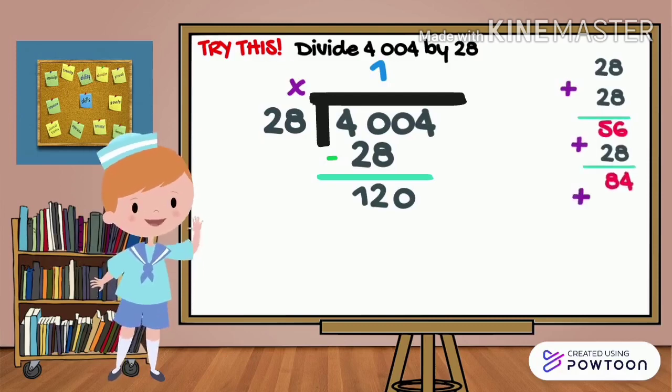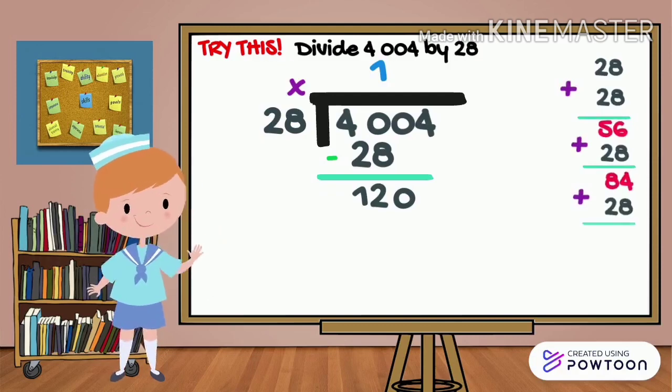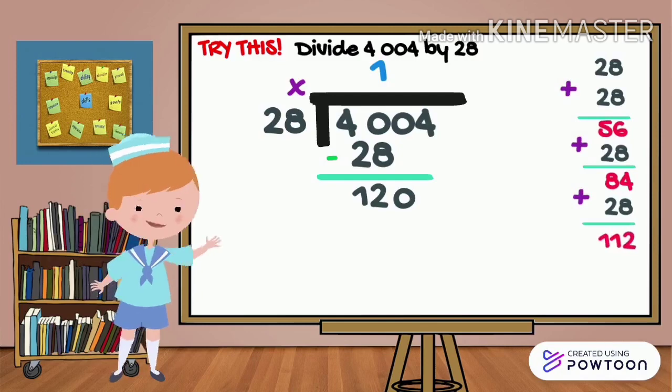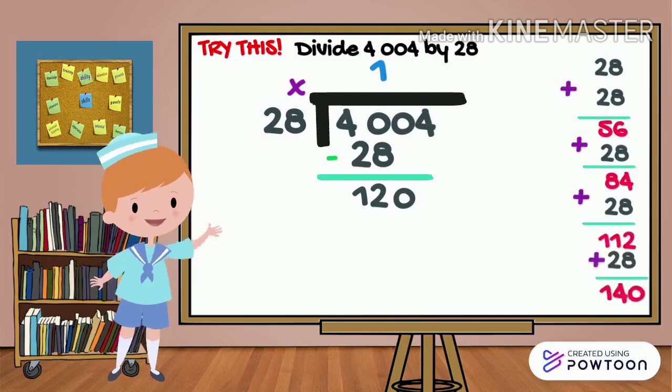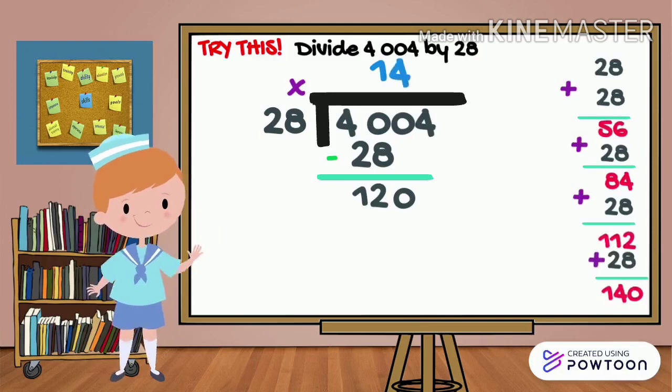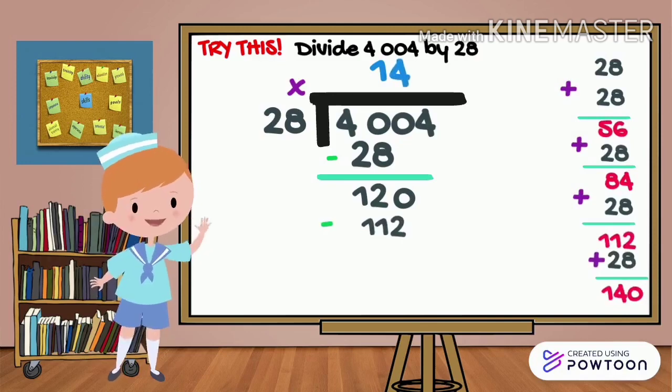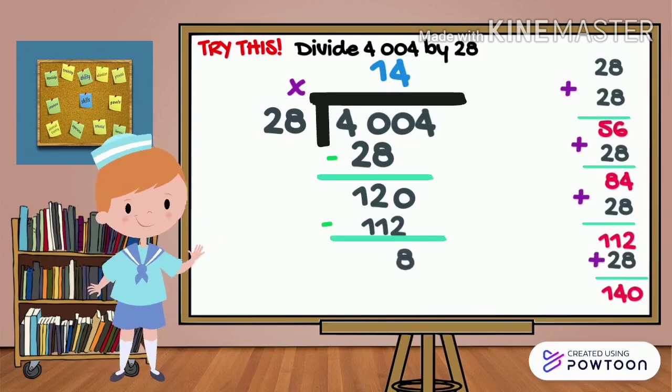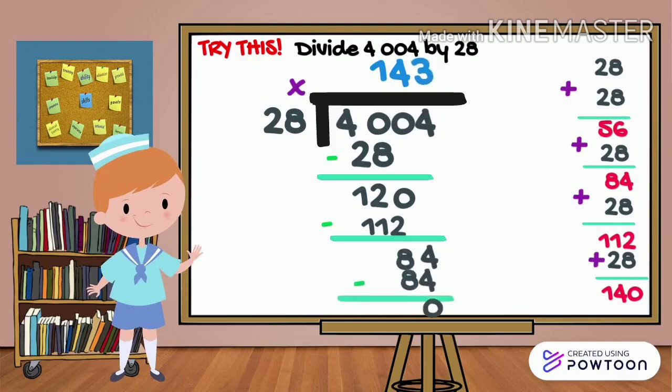Okay, kulang pa. 84 plus 28. So, the answer is 112. Kulang pa din. So, plus 28. The answer is 140. So, sumobra na. Stop lang tayo din sa 112. So, may 4 times naging sa 28. So, 112, then subtract 8. Then, bring down 4. 84 divided by 28 is 3. Times 28 is 84. So, the answer now is 143.